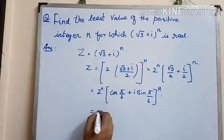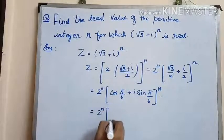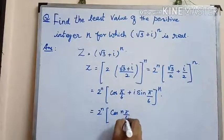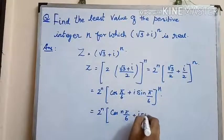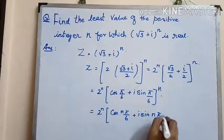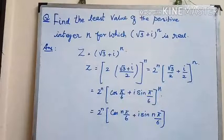which is equal to 2^n [cos(nπ/6) + i·sin(nπ/6)]. The power of n into cos(π/6) and sin(π/6). Mark this equation as 1.